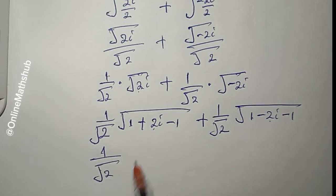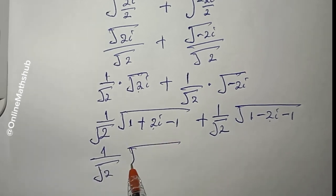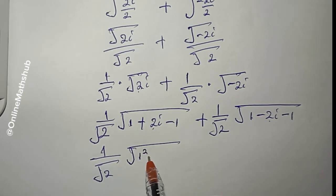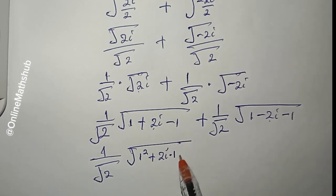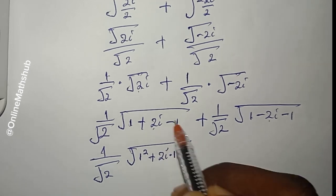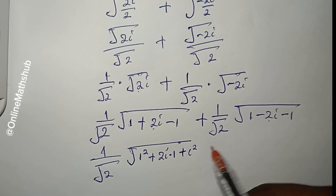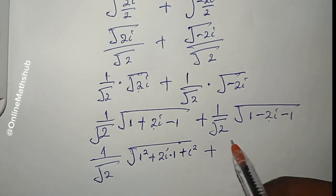Moving on: (1/√2) multiplied by √(1² + 2i·1 + i²). I can write 2i as 2i times 1, and I can write -1 as i². Coming to the other side, (1/√2) multiplied by a similar expression, writing -1 as i².